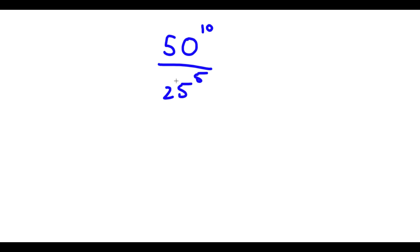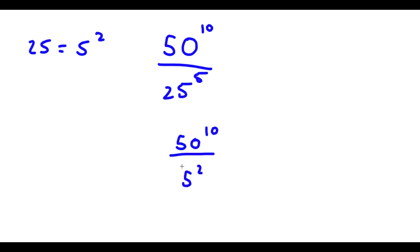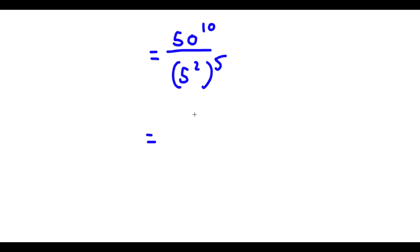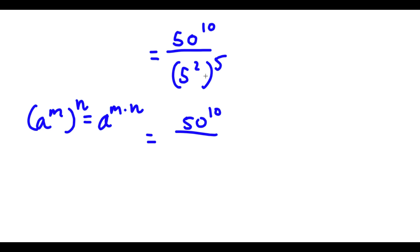The next problem is 50 to the power of 10 over 25 to the power of 5. First off, 25 is the same thing as 5 squared. So now I have 50 to the power of 10 over, if I replace 25 with 5 squared, I have 5 squared to the power of 5. Now if I have something in the form a to the power of m to the power of n, this is equal to a to the power of m times n. So 5 squared to the power of 5 equals 5 to the power of 2 times 5, and 2 times 5 is 10. So now I have 50 to the power of 10 over 5 to the power of 10.